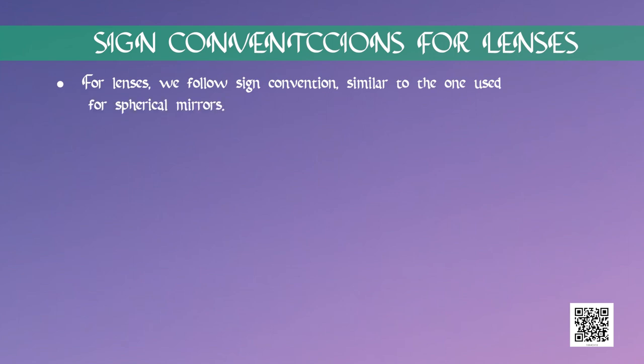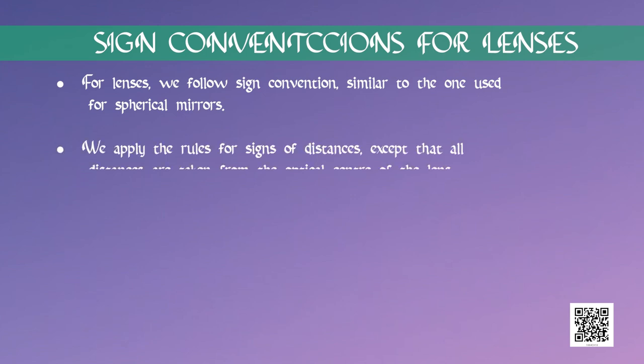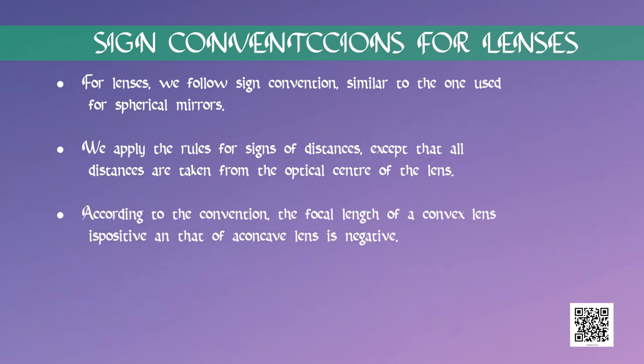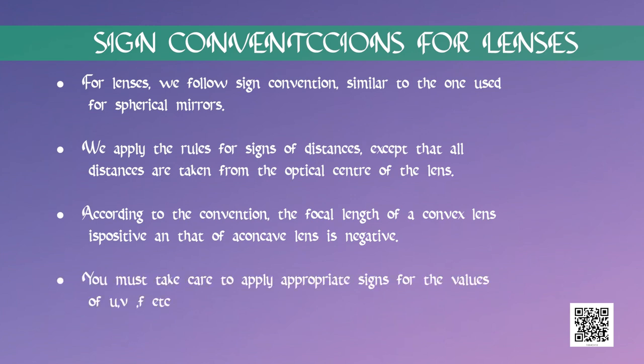Sign convention for spherical lenses: for lenses, we follow sign conventions similar to the ones used for spherical mirrors. We apply the rules for the sign of distances, except that all distances are taken from the optical center of the lens. According to the convention, the focal length of a convex lens is positive and that of a concave lens is negative. You must take care to apply appropriate signs for the values of u, v, f, etc.